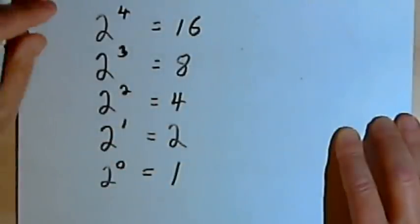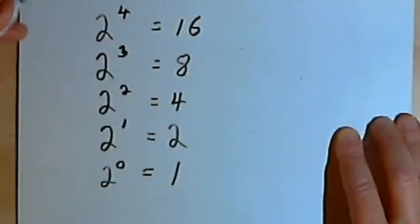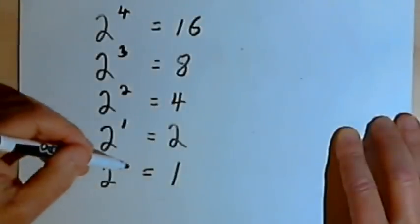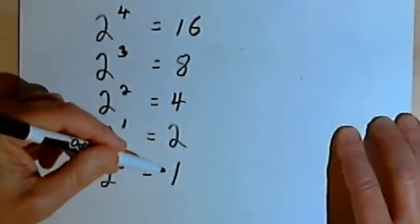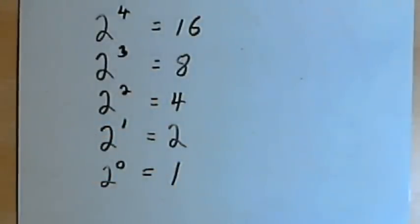So this pattern is kind of forcing us into understanding, or into seeing, that a number raised to the zero power is going to be 1. Here's another way to think of it.